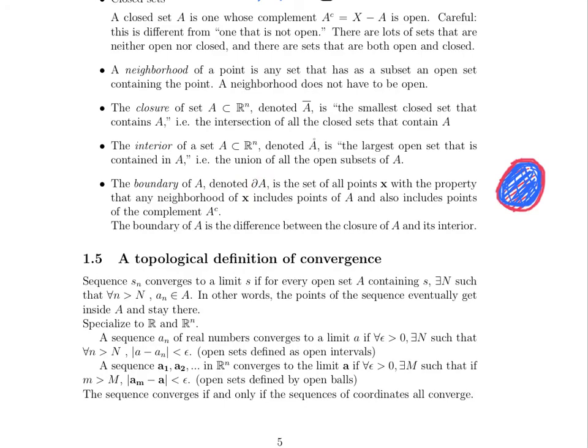So when we specialize to R and R^n, that means a sequence a_n of real numbers converges to a limit if for all epsilon greater than zero, there exists an index such that all the index after that, the points are within epsilon of each other. Basically open sets defined as open intervals. Or we say a sequence of points in R^n converges to a limit point A if for all epsilon greater than zero, there is some index such that all the indices after that particular index are within epsilon of the point A. So open sets are then defined by open balls instead of open intervals in R^n.